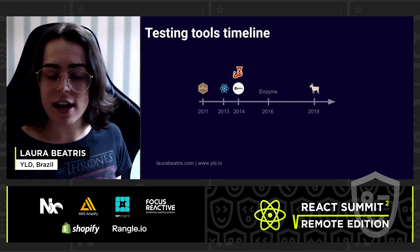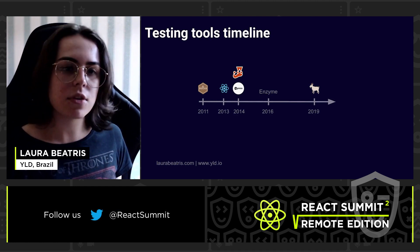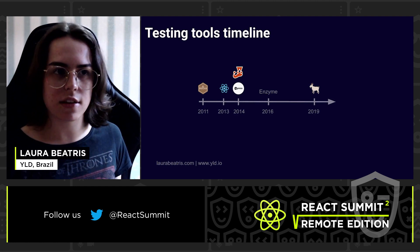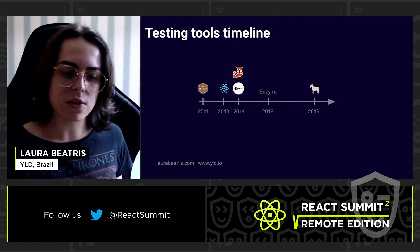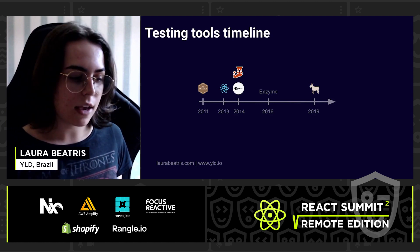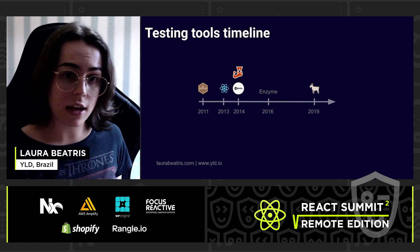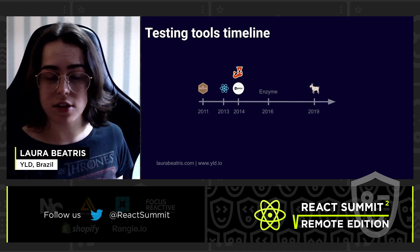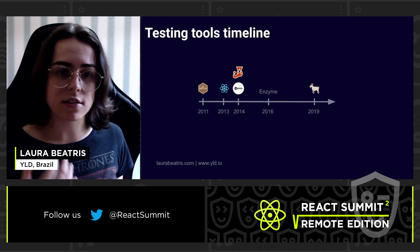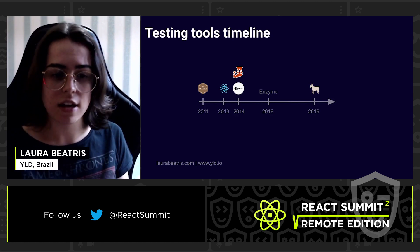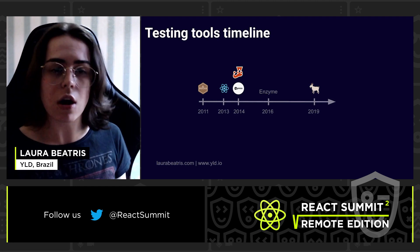In 2019, almost the whole community shifted to use React Testing Library — an amazing library that changed the way React engineers write test cases, because now we are able to write test cases that resemble user actions. This gives us much more confidence when shipping software.